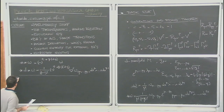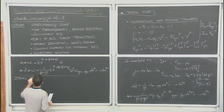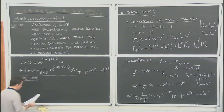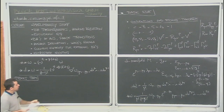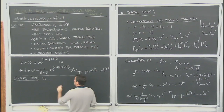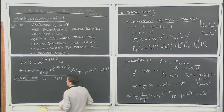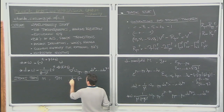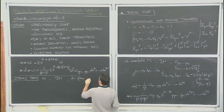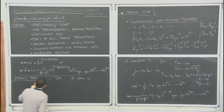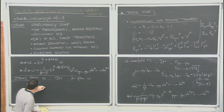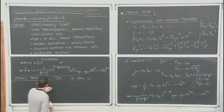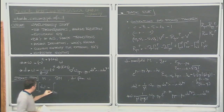Let's recall what the Stokes theorem says. Given our d-dimensional manifold M with boundary ∂M, and a (d-1)-form omega, the Stokes theorem tells us that the integral of d omega over M equals the integral of omega over the boundary ∂M. This is useful to derive conservation laws in an easy way.